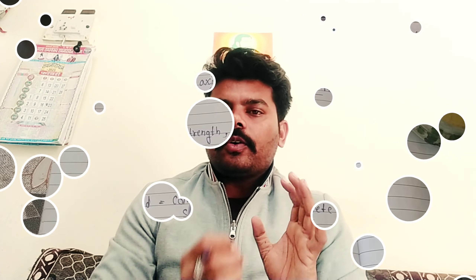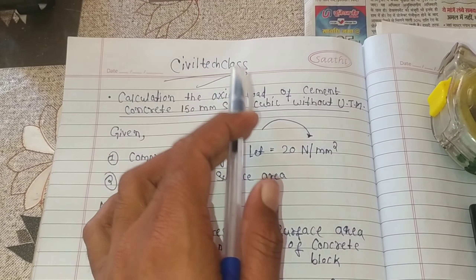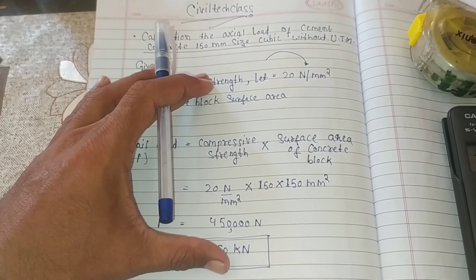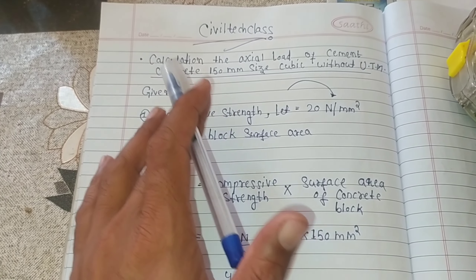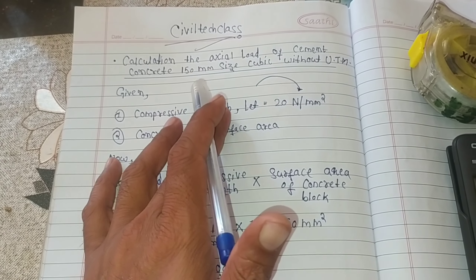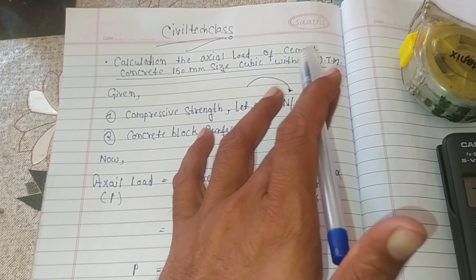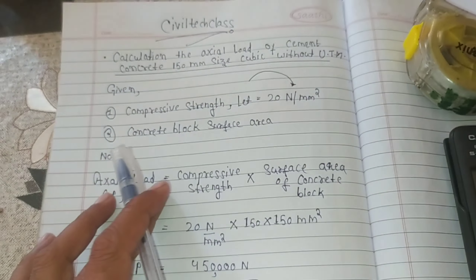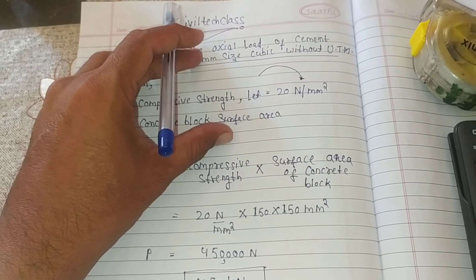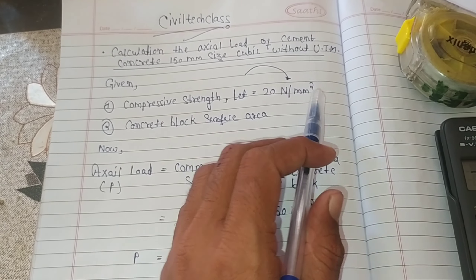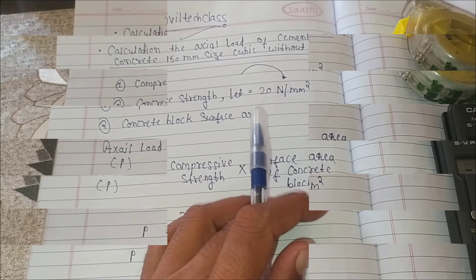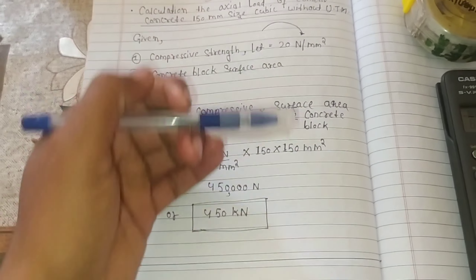We will calculate the compressive load of a concrete cube of 150 mm size. Welcome to Civil Tech Class platform. In this numerical we will calculate the actual load. For this problem we need to know the compressive strength, which we let equal to 20 Newton per mm square, and the concrete block surface area.